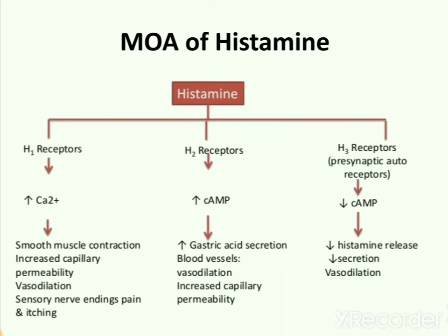Now, the action of histamine on H3 receptor. H3 receptor is a presynaptic autoreceptor type. Histamine activates H3 receptor and causes decrease in the concentration of the second messenger cyclic amino monophosphate. This causes decrease in histamine release, decrease in secretion, and decrease in vasodilation.